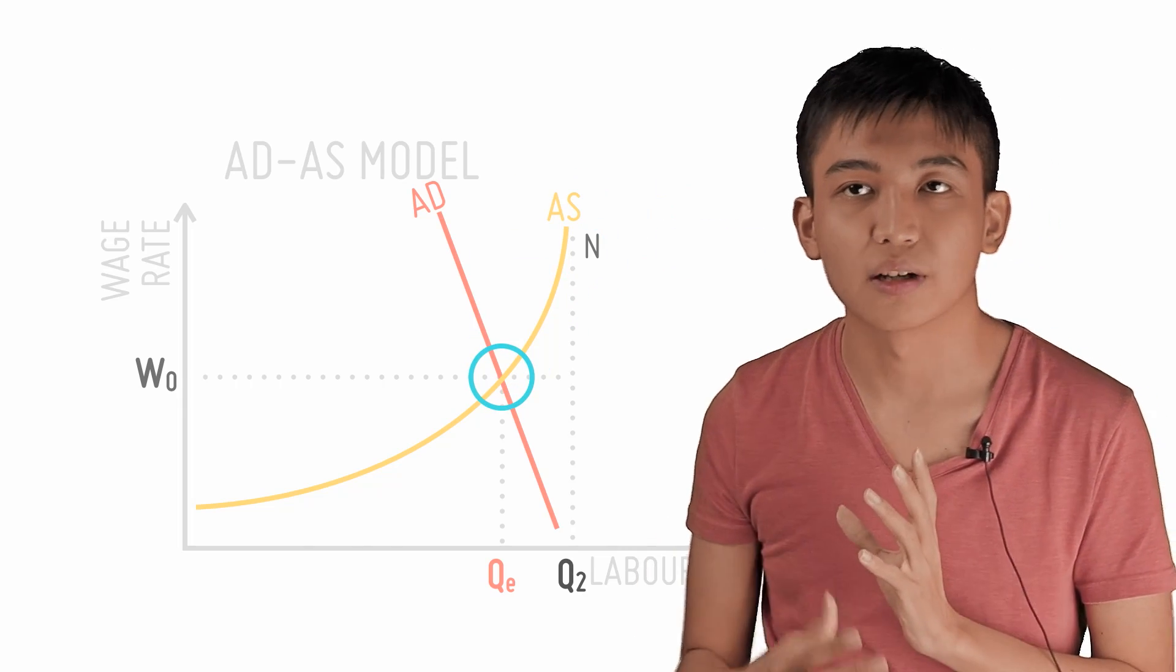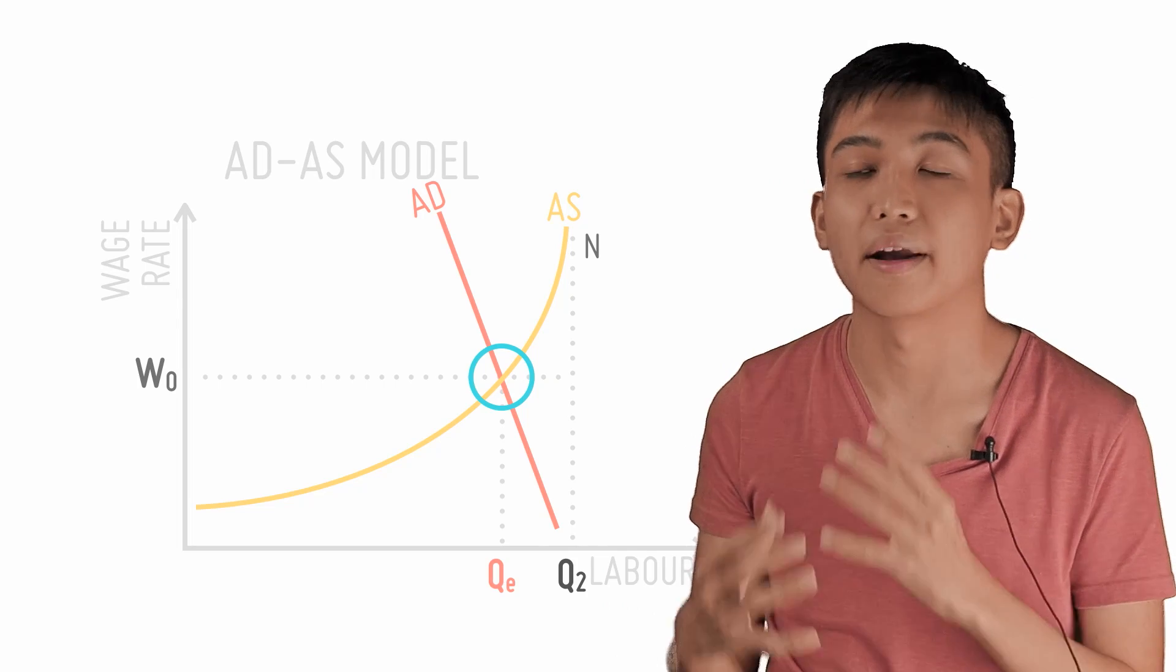QE represents the equilibrium number of workers who can find a job. At QE, there is equilibrium unemployment.